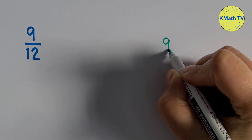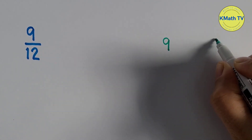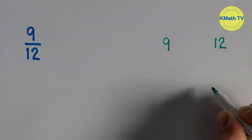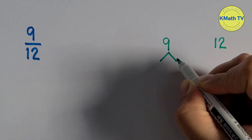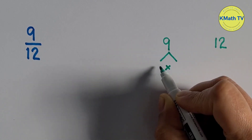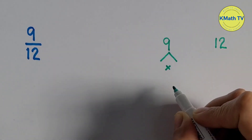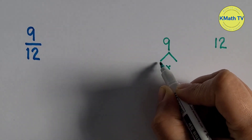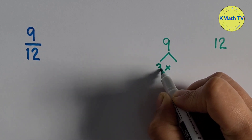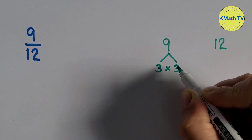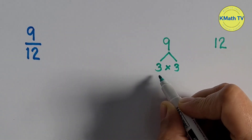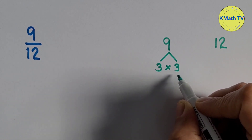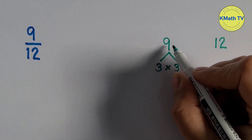Let's find the GCF of 9 and 12 using prime factorization. What numbers can we multiply to get the product 9? We can multiply 3 and 3. 3 times 3 equals 9. 3 is a prime number, so these are the prime factors of 9.